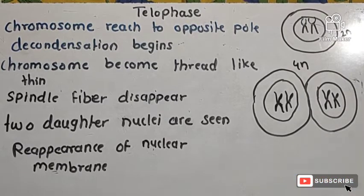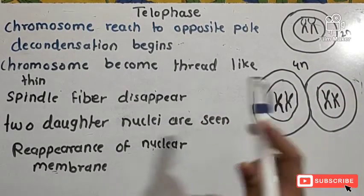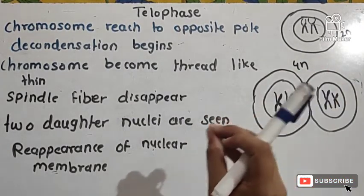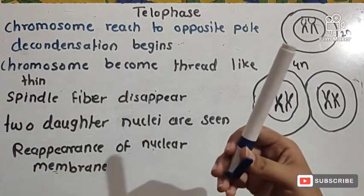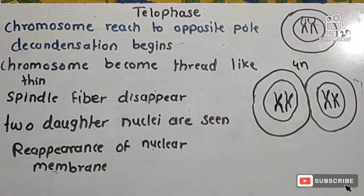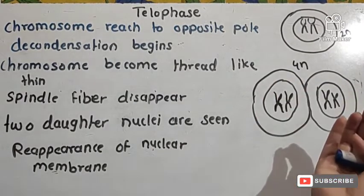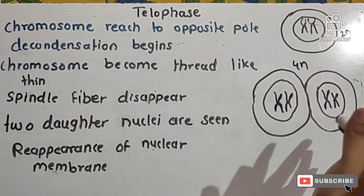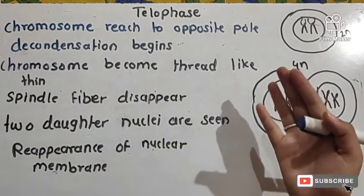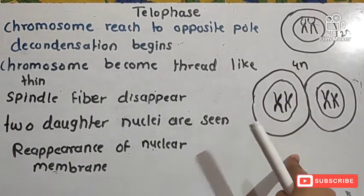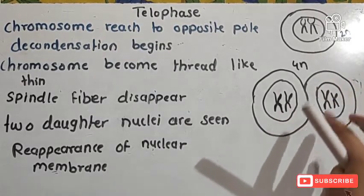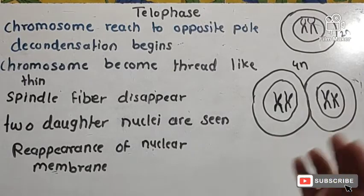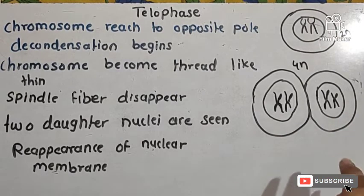In telophase, chromosomes reach the opposite pole of the cell and their decondensation begins. As in a normal cell, the chromosome returns to a thin thread-like structure. Spindle fibers disappear and the nuclear membrane becomes prominent again. Two daughter nuclei are formed, and the reappearance of the nuclear membrane marks the completion of karyokinesis in mitosis.